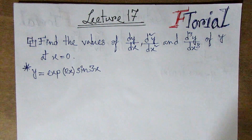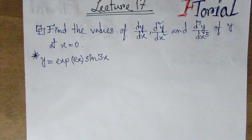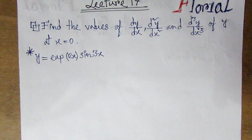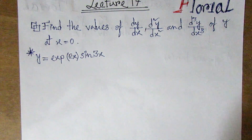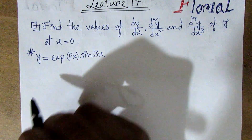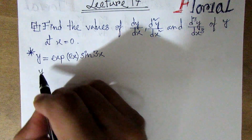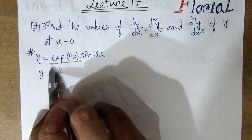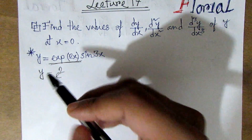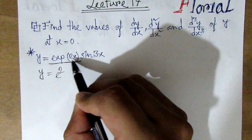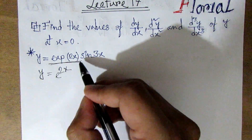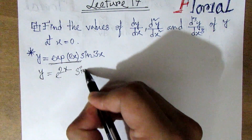So let's start. y is equal to e to the power 2x, and we will say y equals e^(2x) · sin(3x).